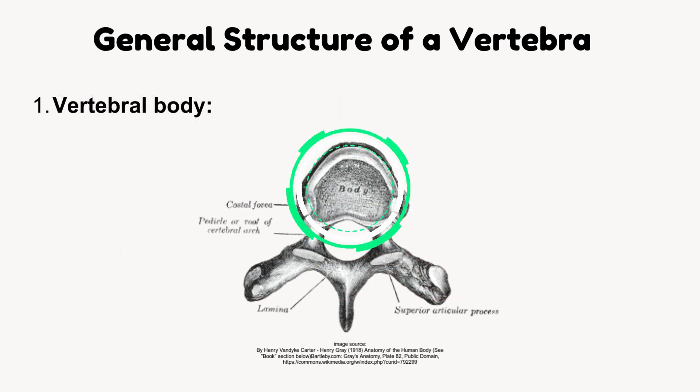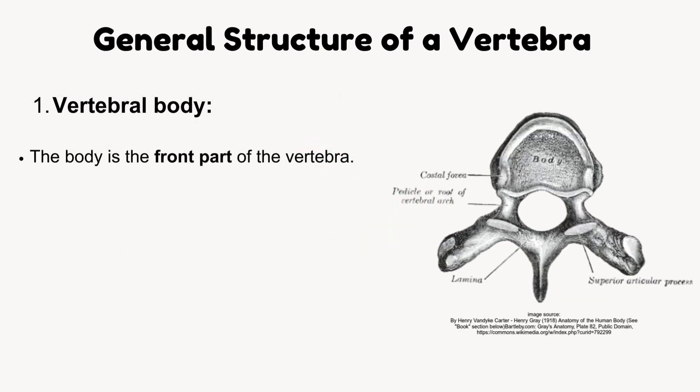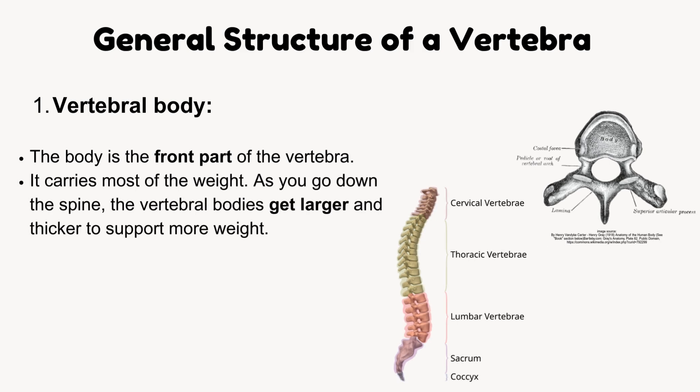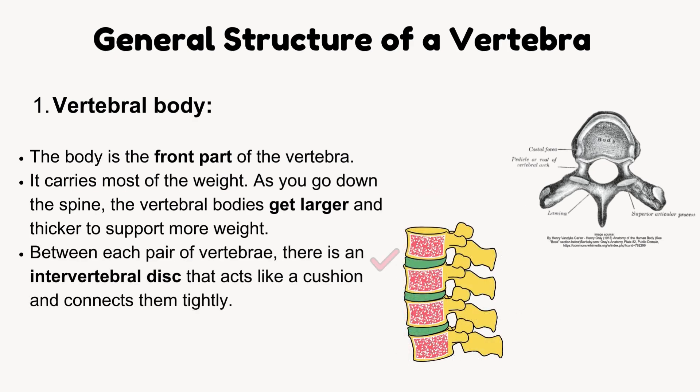Vertebral body. The body is the front part of the vertebra and carries most of the weight. As you go down the spine, the vertebral bodies get larger and thicker to support more weight. Between each pair of vertebrae, there is an intervertebral disc that acts like a cushion and connects them tightly.